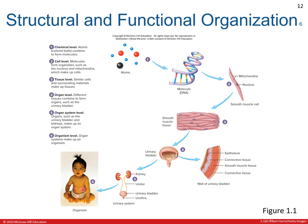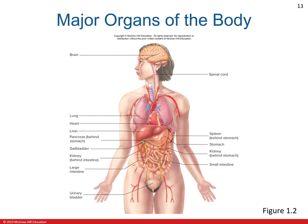An organ system makes up an organism, such as the reproductive system, respiratory system, and cardiovascular system. There are different major organs of the body, including the brain, the heart, the lungs, the liver, the large and small intestines, the urinary bladder, and the urethra. There are many different organ systems in our body, and these are the ones we will be discussing through the course of your anatomy and physiology.